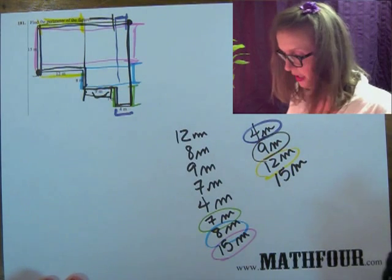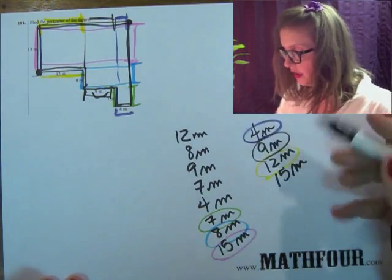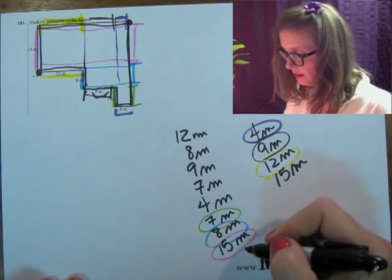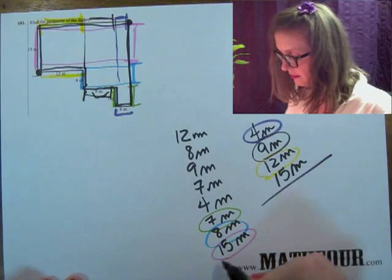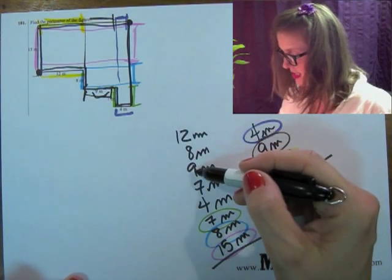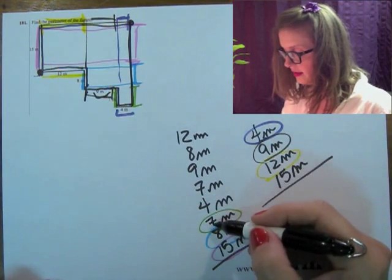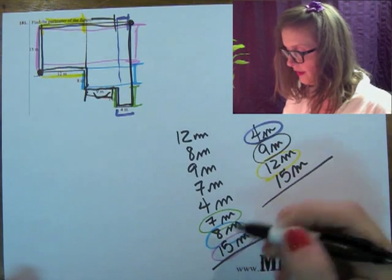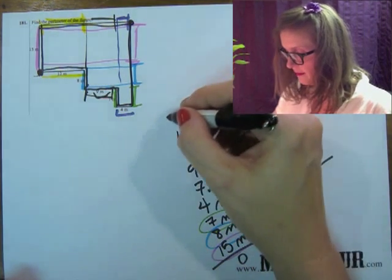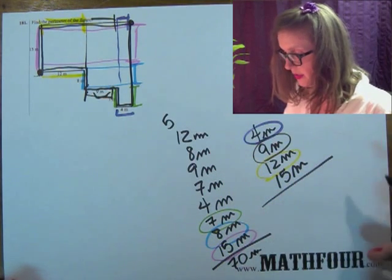Now I can add all of those numbers up. Oh my goodness. So all of these get added. I'm going to add this column and then this column. 10, 19, 26, 30, 37, 45, 50, 5, 6, 7. 70 meters there.